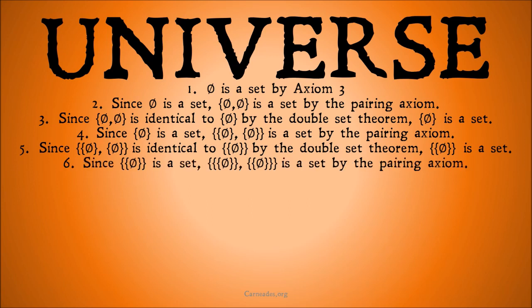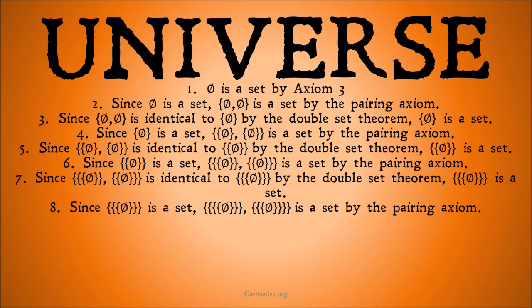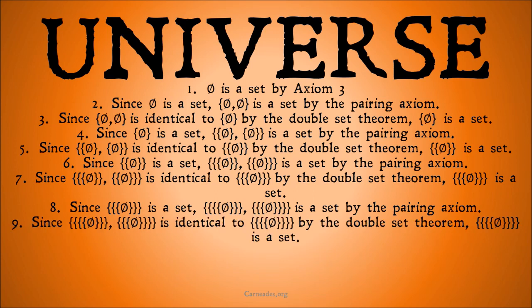Since the set of the set of the null set is a set, we apply the pairing axiom and the double set theorem again to conclude that the set of the set of the set of the null set is a set — a fourth distinct set. Continuing this pattern, the set of the set of the set of the set of the null set is also a set — that's five. And then the set of the set of the set of the set of the set of the null set is a set as well. It becomes quite a tongue twister, but the pattern is clear.